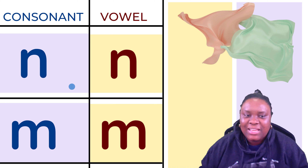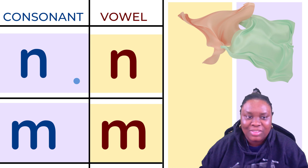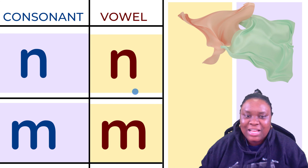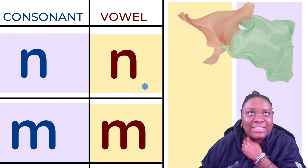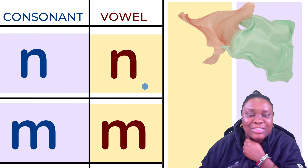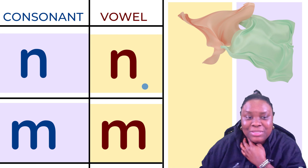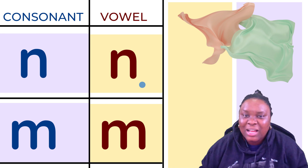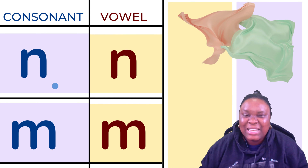When ni is serving as a consonant, it is 'ni.' When ni is serving as a vowel — when it is the only letter in that syllable — it becomes 'n.' Instead of pronouncing it as the letter 'ni' that it is, in that case it becomes 'n.'